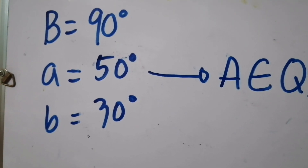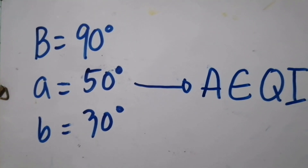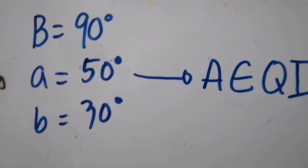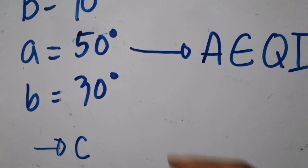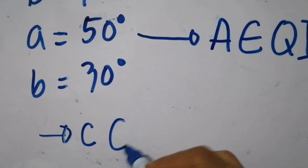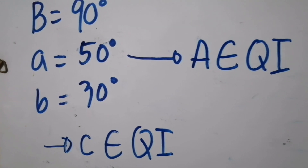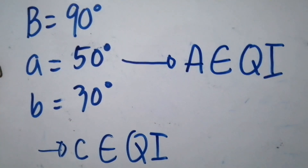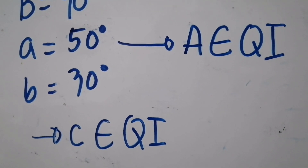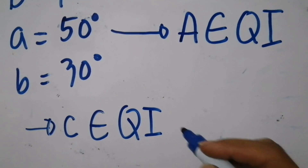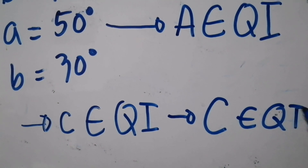Using the second theorem: since the first two sides are both acute and both terminate in Quadrant 1, small c should also terminate in Quadrant 1. Going back to Theorem 1, this tells us that angle C should also terminate in Quadrant 1.